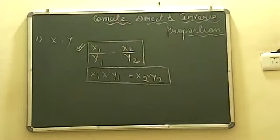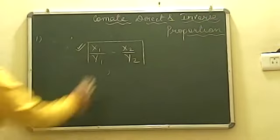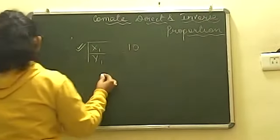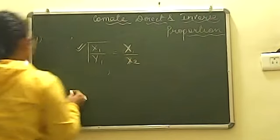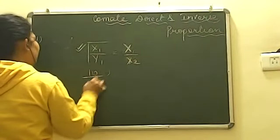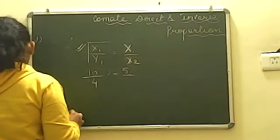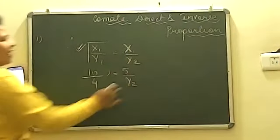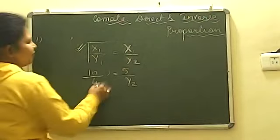Question number two is telling that if x and y vary inversely, if the value of x1 is 10, let us put x1 equals 10. Using the same formula which we have just written, if x1 equals 10, y1 equals 4, if x2 equals 5, then what will be the value of y2? In the question it is written a little wrong, this is y2 and the value of y2 is missing, but you have to find out the value of y1 which is misprinted. Please correct it.